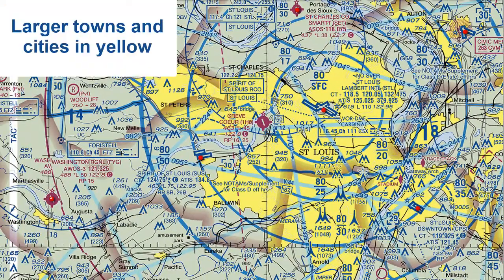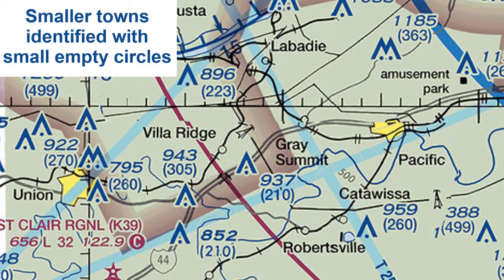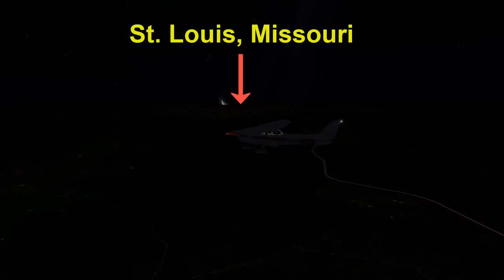Populated areas of large towns or cities are depicted in yellow, such as St. Louis, Washington, and Milstott. Smaller towns are identified with empty circles — for example, here are the Missouri towns of Gray Summit, Villa Ridge, and Robertsville. When flying at night, the town or city lights of these populated areas can be referenced.